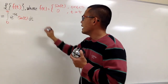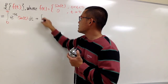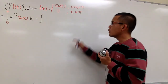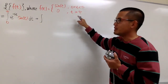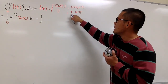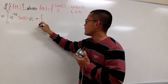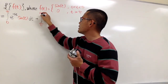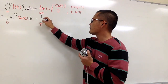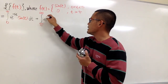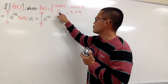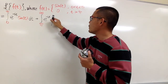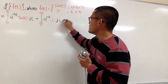Then we add the second integral, which goes from π to infinity, because it says t is greater than π. We still have e to the negative st times whichever function, which is 0 — so this part is going to be super easy.